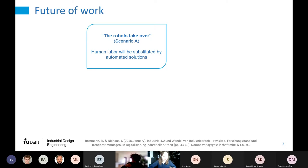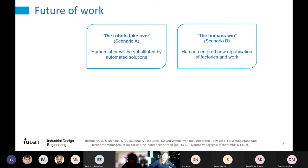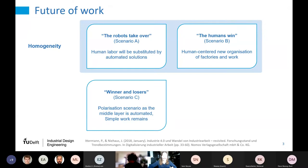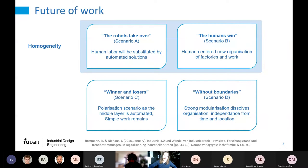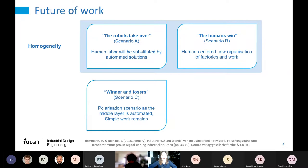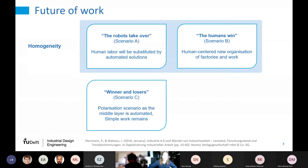The first scenario is that robots will take over — what you mainly hear in mass media. There is also a contrast scenario where new technology is used to come to a more human-centered organization. There are also polarization scenarios: winners in the higher-qualified region. I love the quote: there will be two types of people — those who tell computers what to do, and those who are told by computers what to do.